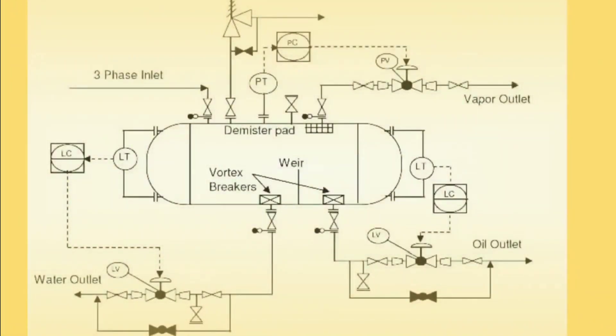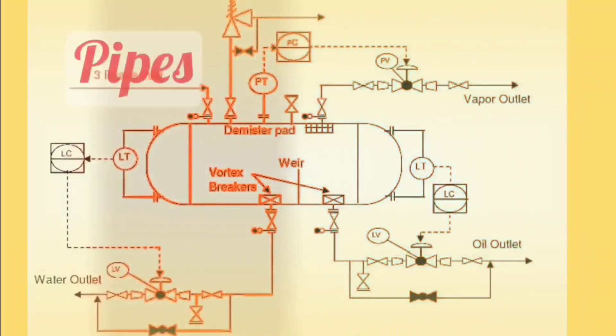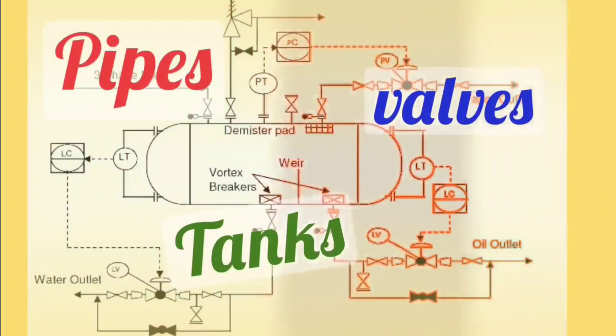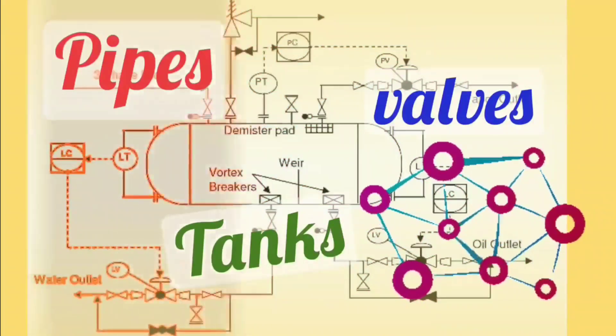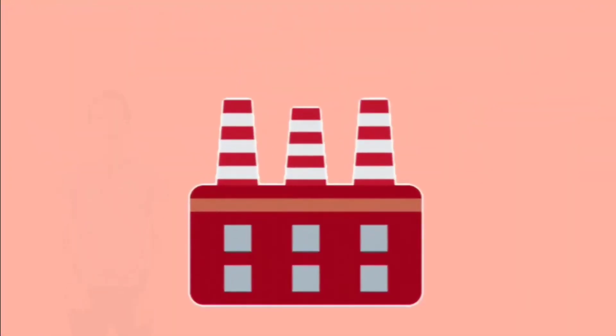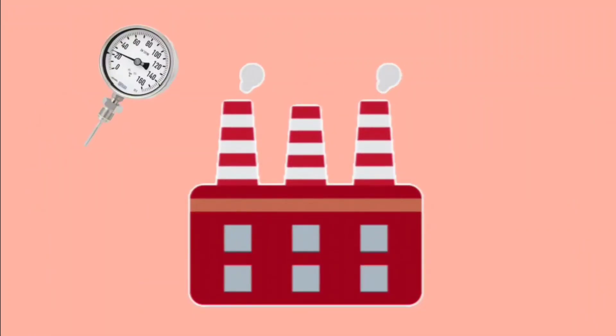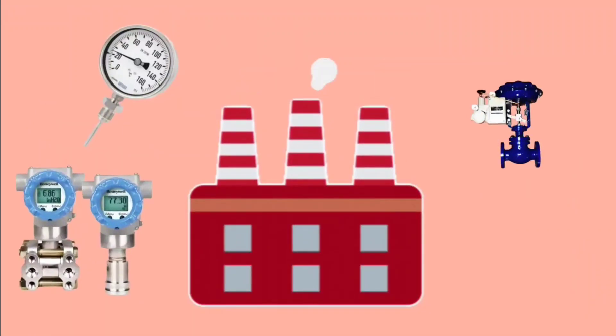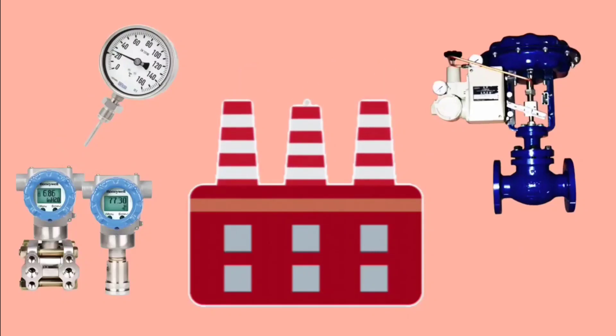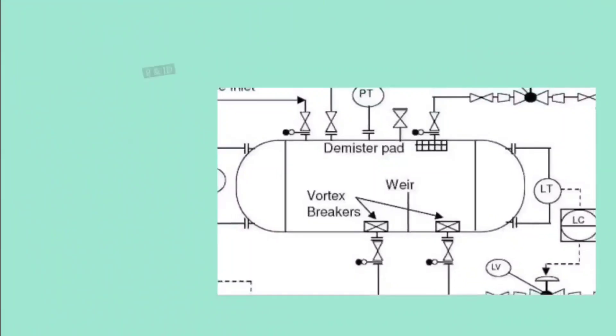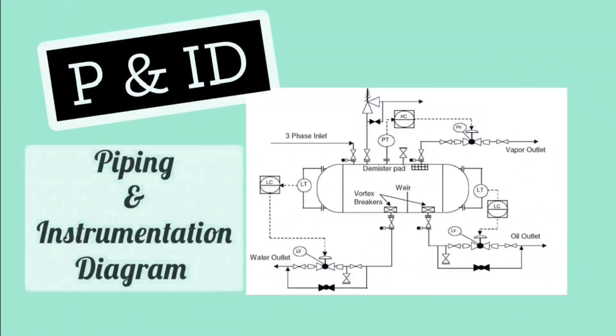Let's take the next question: What is P and ID in instrumentation? This is a detailed diagram showing where and how various pipes, tanks, valves, pumps, and instrumentation are connected in the process. In any industry, how and where various instruments like pressure gauge, pressure transmitters, or control valves are connected, this is shown by a diagram and it is known as P and ID, or piping and instrumentation diagram.